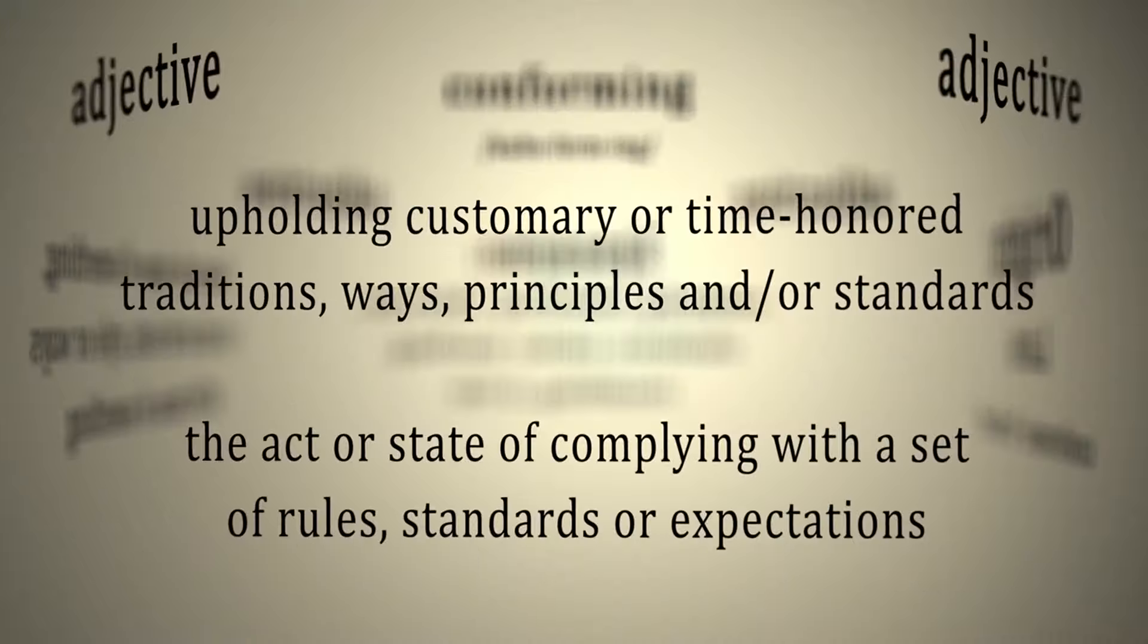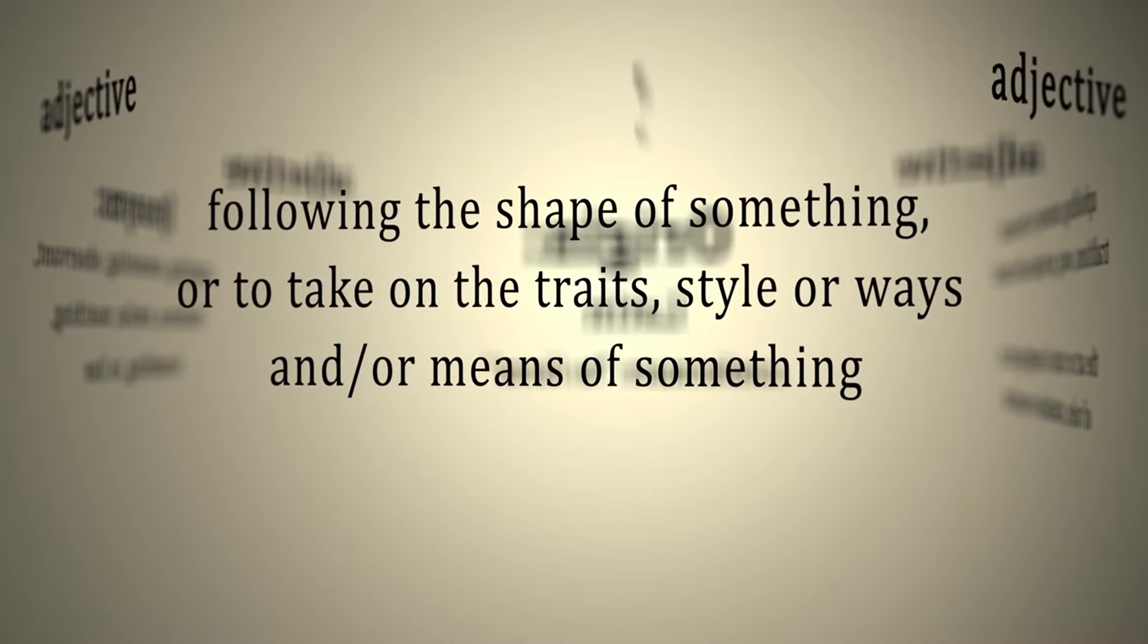At the heart of CCC is Conformal Geometry, a mathematical transformation that maintains angles while altering distances. This transformation preserves information and structures from one eon, passing them to subsequent eons, creating a cyclical pattern in the universe's evolution.